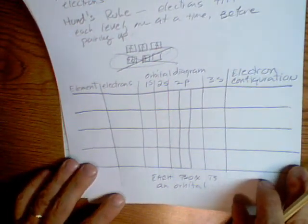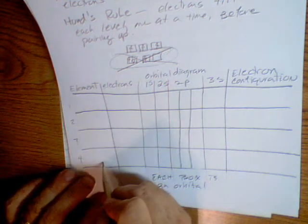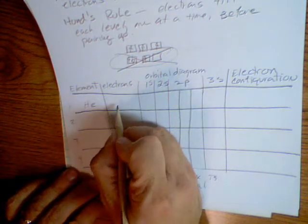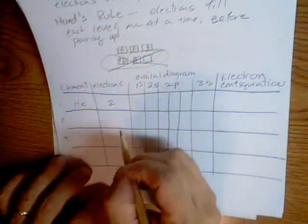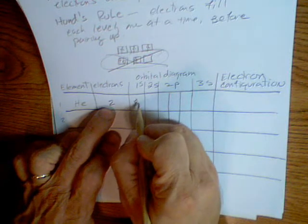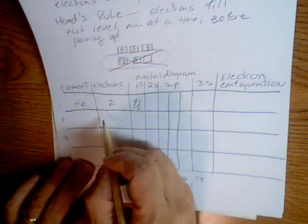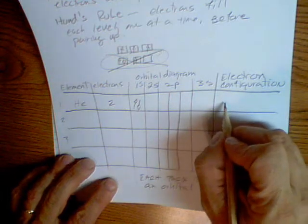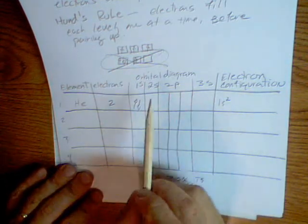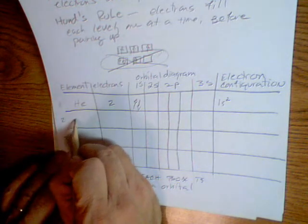So, let's try some electron configurations. Here's one, two, three, four different elements. Let's start with helium. Helium has two electrons. I know that because I looked it up on the periodic table. So, we have two electrons in the first 1s orbital. And so, they're going to have opposite spins. And so, that electron configuration is going to be 1s2. Because there is two electrons in the first orbital.